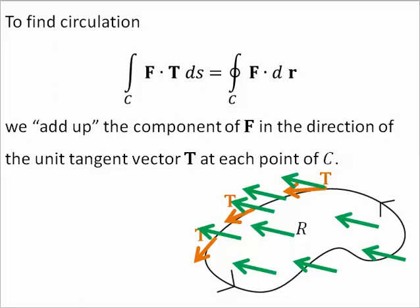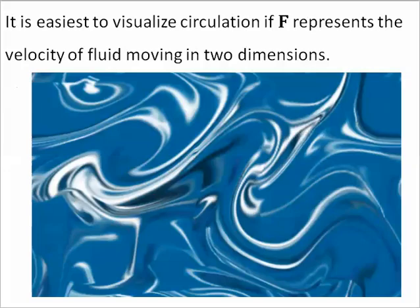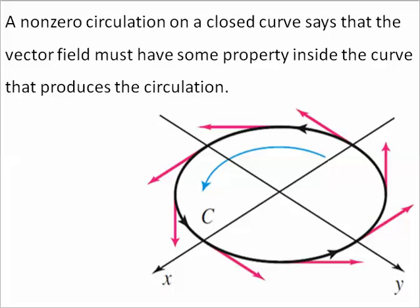So, circulation measures how much of the vector field points in the direction of the curve. It is easiest to visualize circulation if F represents the velocity of fluid moving in two dimensions. A non-zero circulation on a closed curve says that the vector field must have some property inside the curve that produces the circulation.